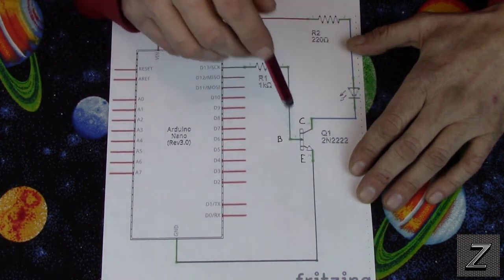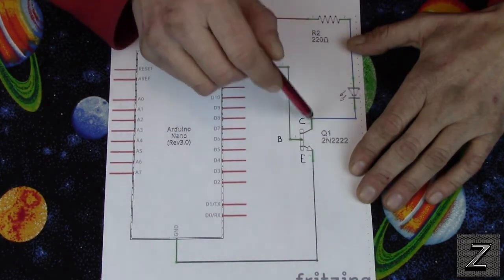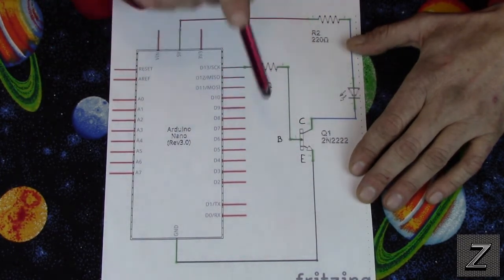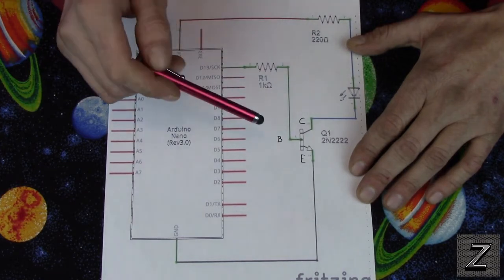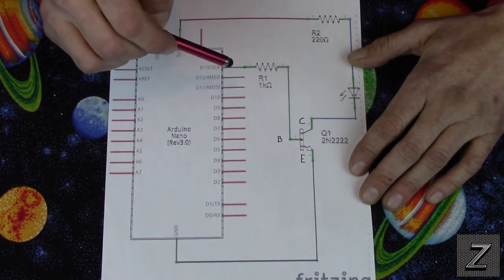And that's why we're using a transistor, it acts like a switch. It lets the current flow through here, but it doesn't go back into the board. So it's pretty much just a solid state relay is what we're setting this up to be.